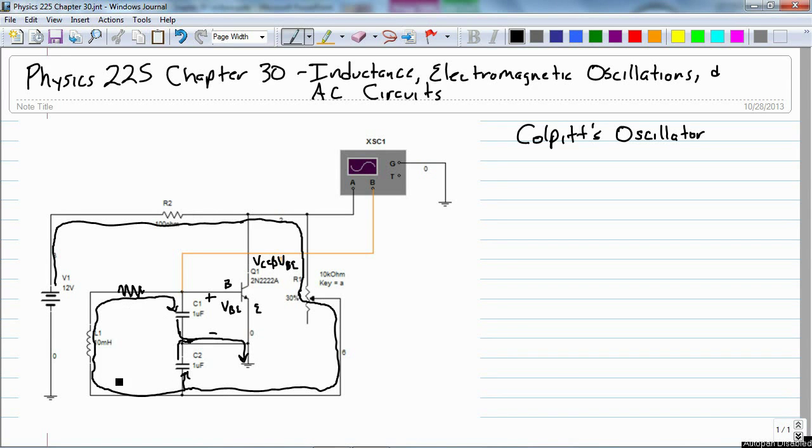The oscillations start in the inductor and the capacitor, but it's not going to last forever. It's going to start bleeding off energy because of the resistance, because the transistor has resistance.